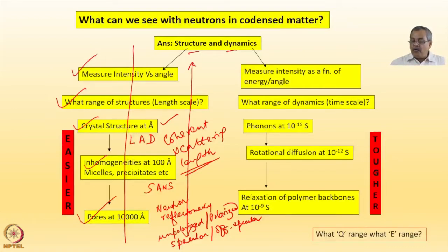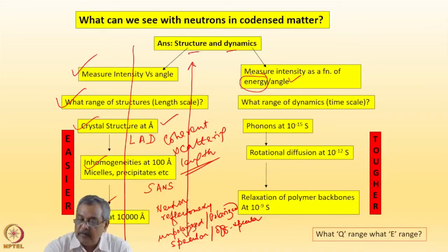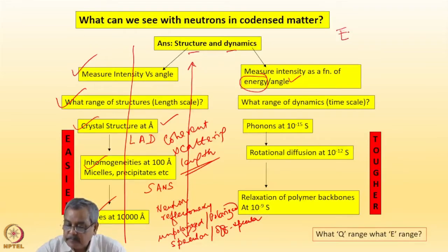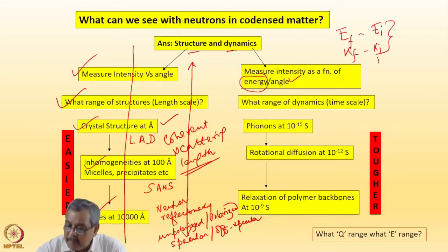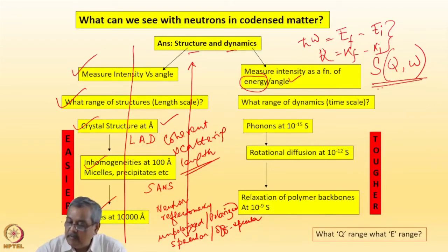Now for dynamics you need to measure intensity of the scattered beam not only as a function of angle, but also we have to find out the energy of the scattered beam. So you have E_F minus E_I which are the energy differences, K_F minus K_I which are the wave vector differences, and we will be measuring what is known as the scattering law, which equals ℏω and Q the wave vector transfer. This is what we will be measuring for dynamics.